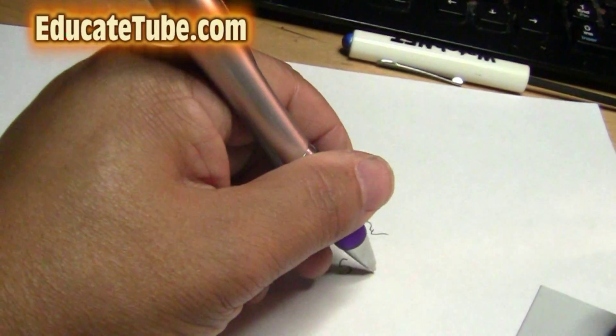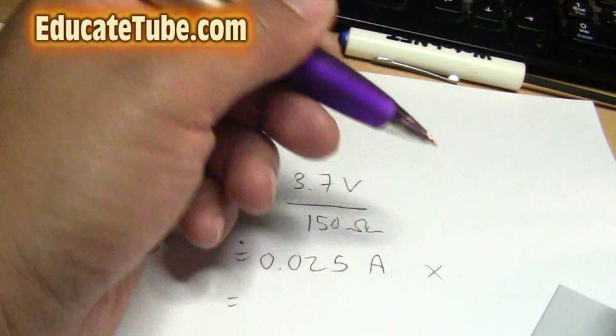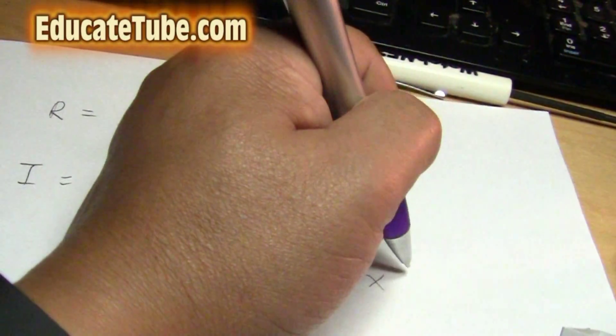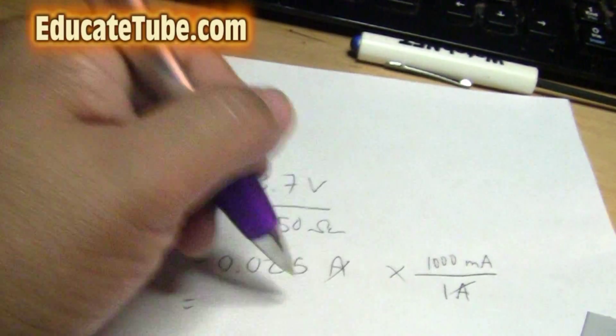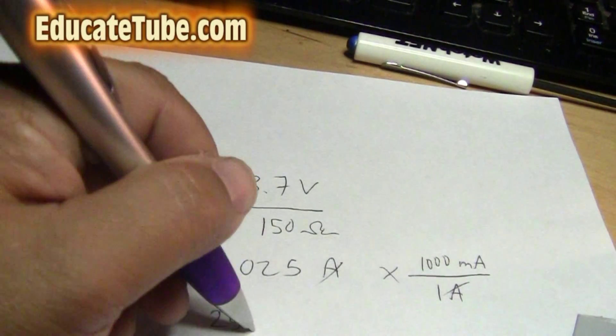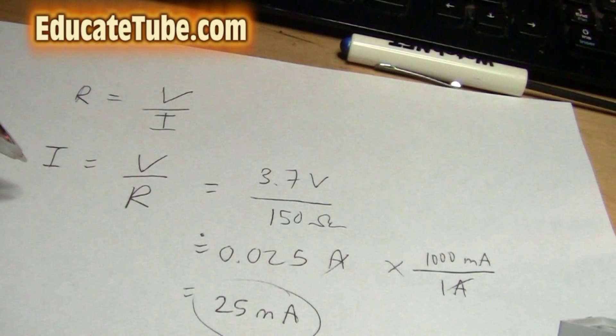Amp. Now multiply that by 1,000 because we want to convert it into milliamp. So that's 1,000 milliamp over 1 amp. That'll give us 25 milliamp of current that's going to run across this circuit if I build one.